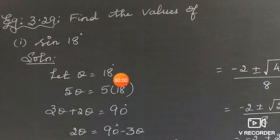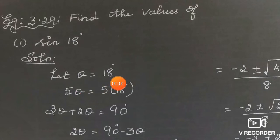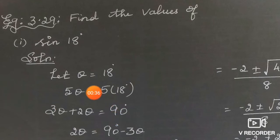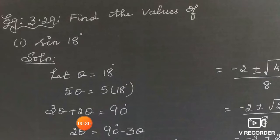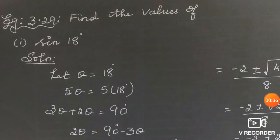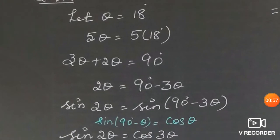Assume theta is equal to 18. Now multiply by 5 on both sides. Why do we choose 5? Because 5 × 18 = 90°, which is a special angle. So 5θ = 90°. We split 5θ as 3θ + 2θ, because later we will apply the triple angle identity and the double angle identity. Keep 2θ on the left-hand side and bring 3θ to the right-hand side.